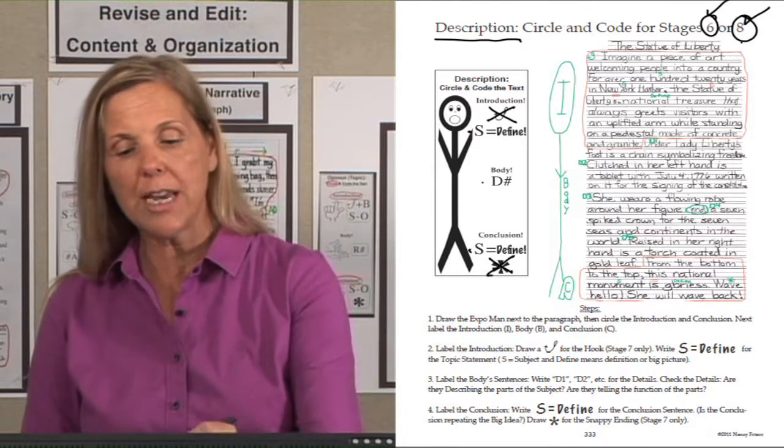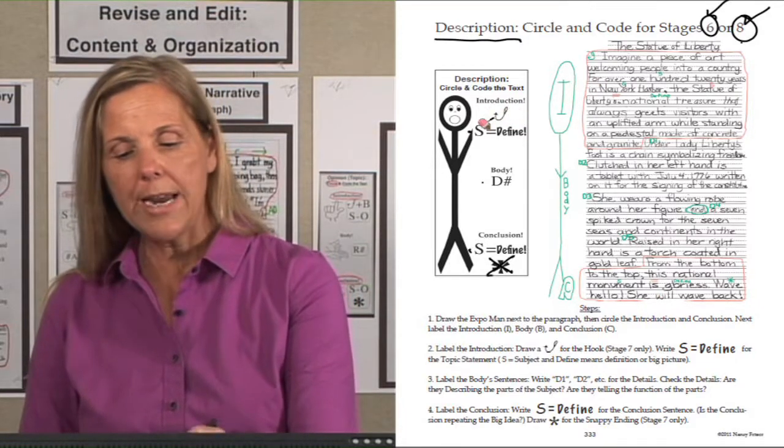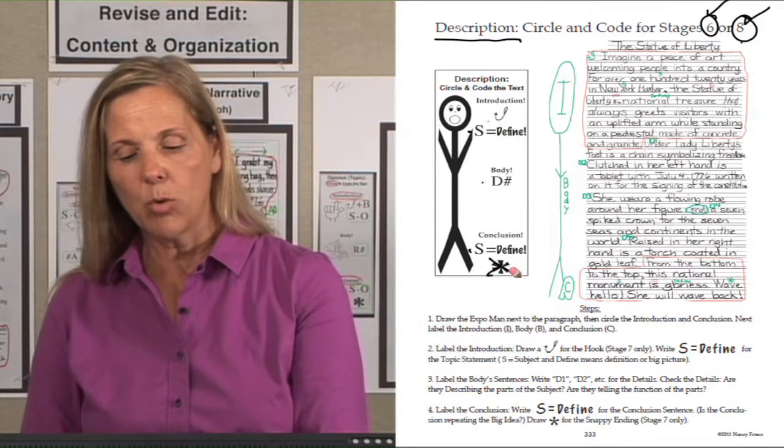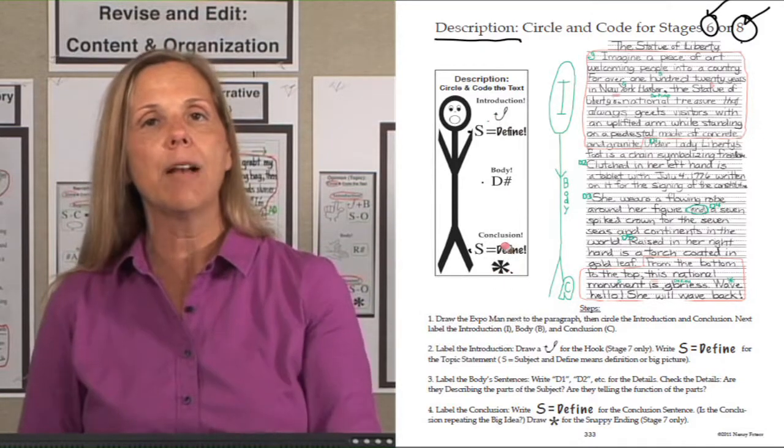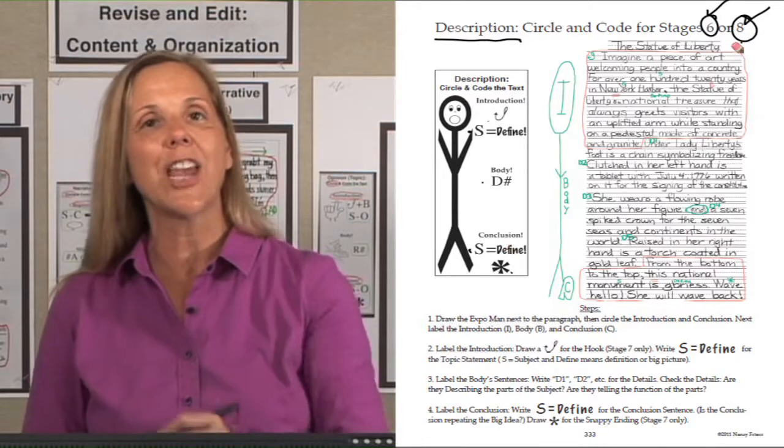So when students get to this level, what would they do? They would erase where they crossed out the hook and snappy ending, and now they have the bookmark for the stage eight level.